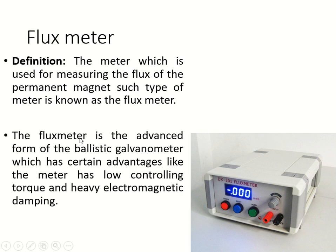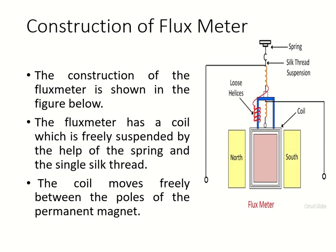The flux meter is an advanced form of ballistic galvanometer which has certain advantages. It has low controlling torque and heavy electromagnetic damping. This low controlling torque and heavy electromagnetic damping provides accurate reading.